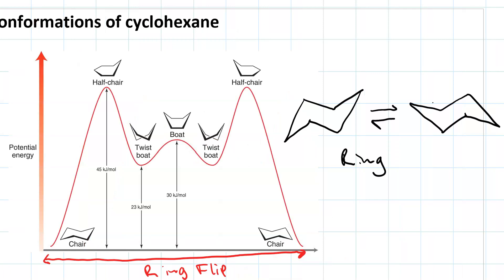So normally, we'll consider a ring flip like this. Cyclohexane spends all of its time either as this chair or this chair.